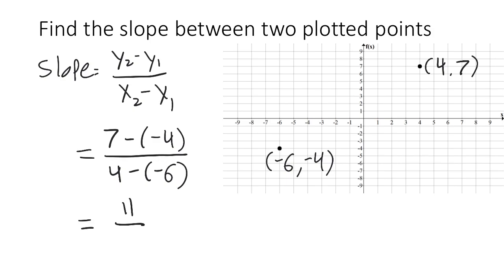And 4 minus negative 6 is 4 plus 6, which is 10. So, the slope between those two points is 11 over 10.